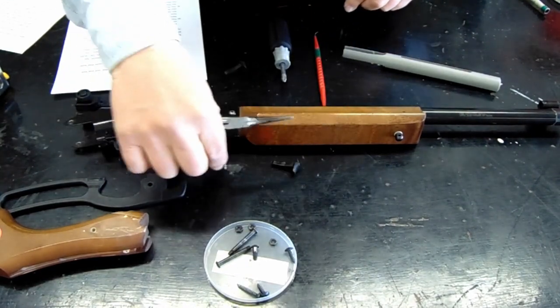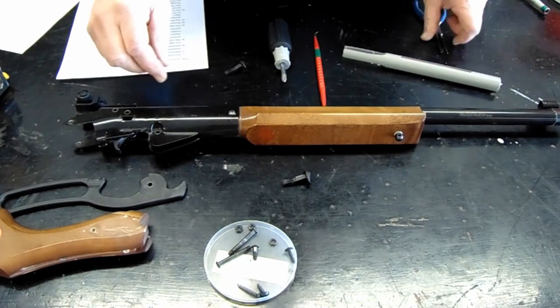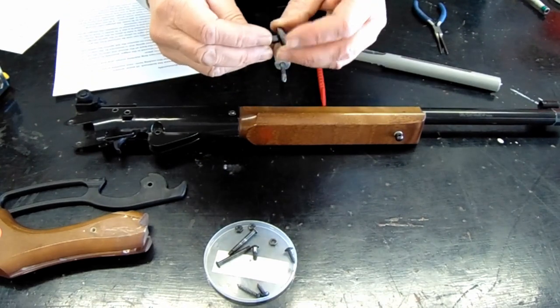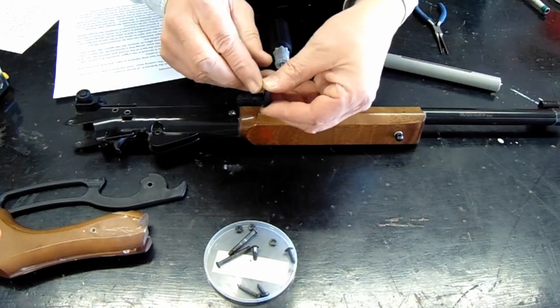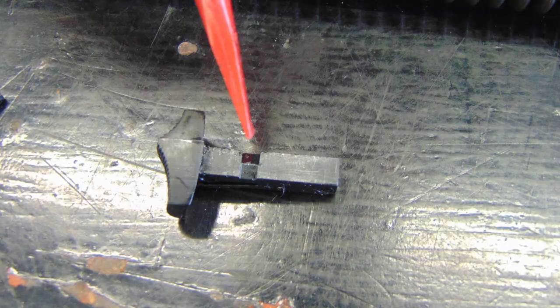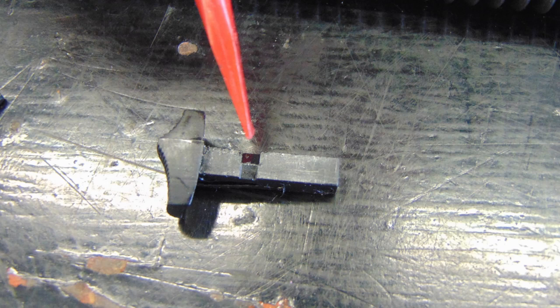Once that safety is pulled straight out, please note that there's a notch on the bottom of the safety, and that goes down. So when you reinsert it, the notch will be on the bottom.